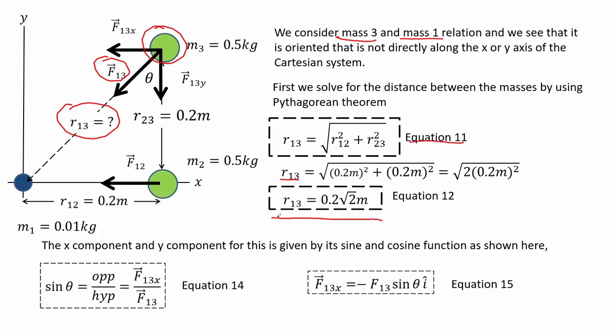The x-component and y-component for this are given by the sine and cosine functions. For the x-component it is given by equation 14, and we rewrite this to get an expression for the x-component, giving equation 15. We see that the orientation of the x-component tells us it is a negative value, since it is pointed in the negative x-axis, so its unit vector is a negative i-hat.